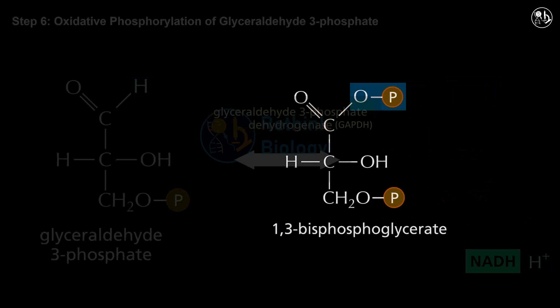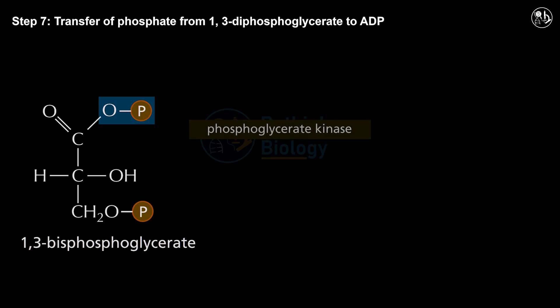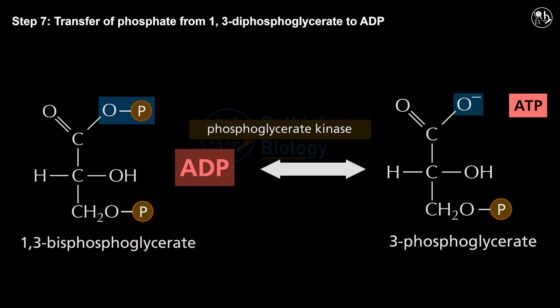Step 7: Transfer of phosphate from 1,3-bisphosphoglycerate to ADP. In this step, the enzyme phosphoglycerokinase transfers a phosphate from 1,3-bisphosphoglycerate to a molecule of ADP to form ATP. The product of this step is 3-phosphoglycerate, which has one phosphate group attached to its third carbon atom.